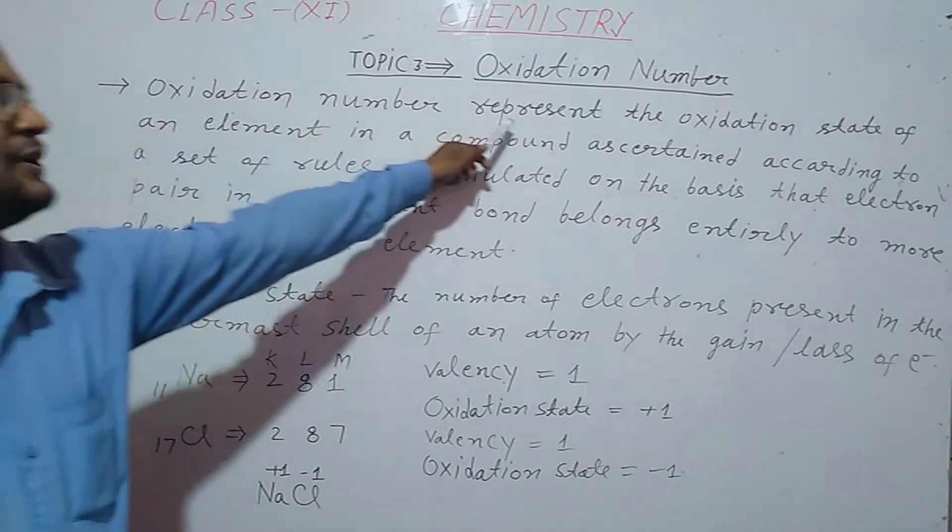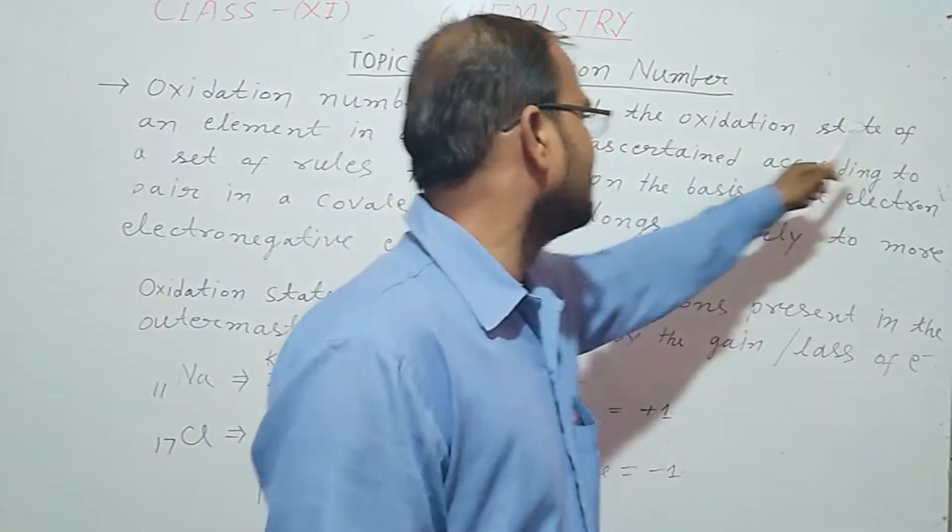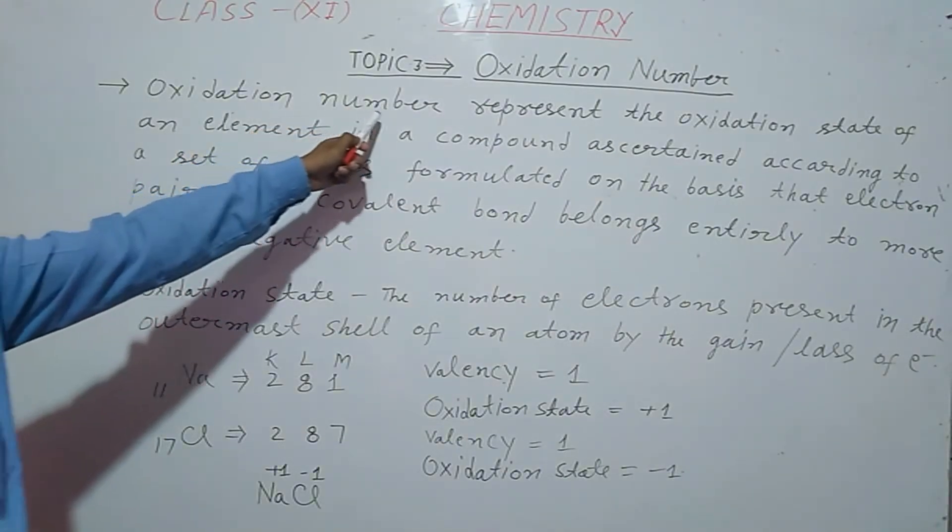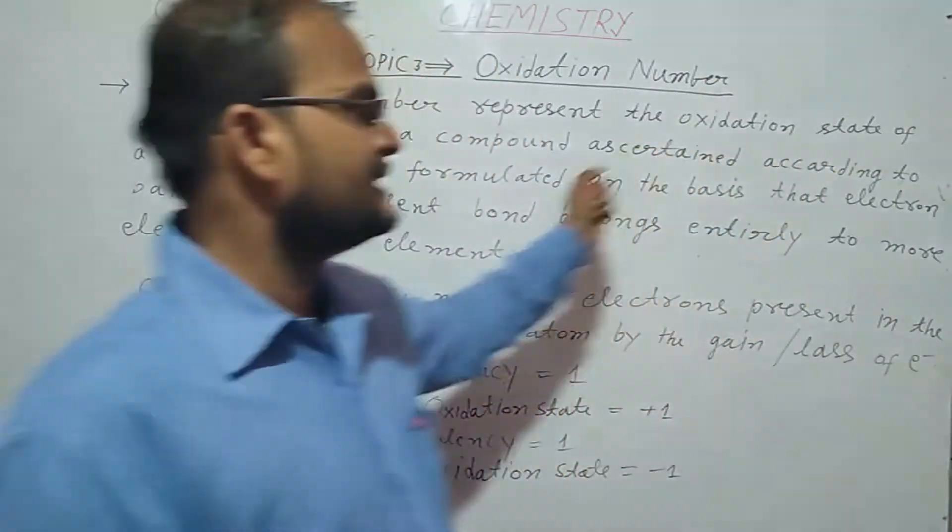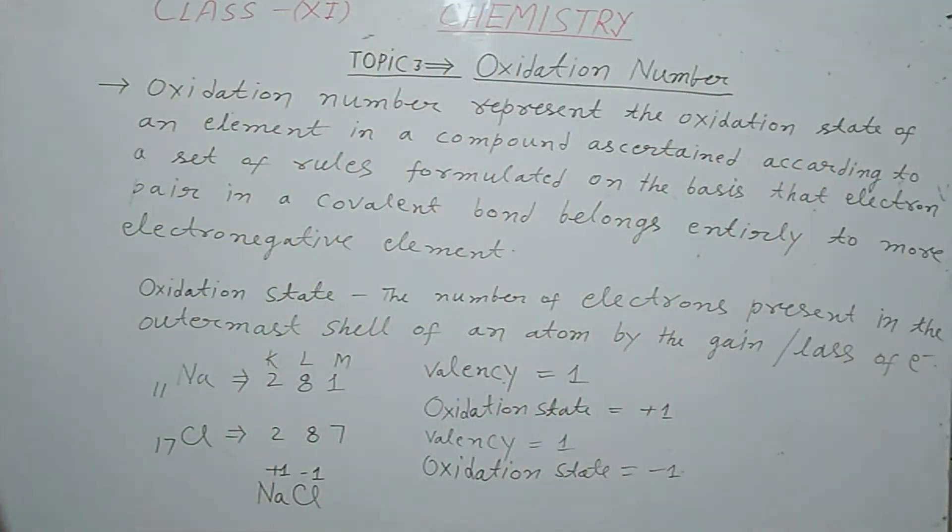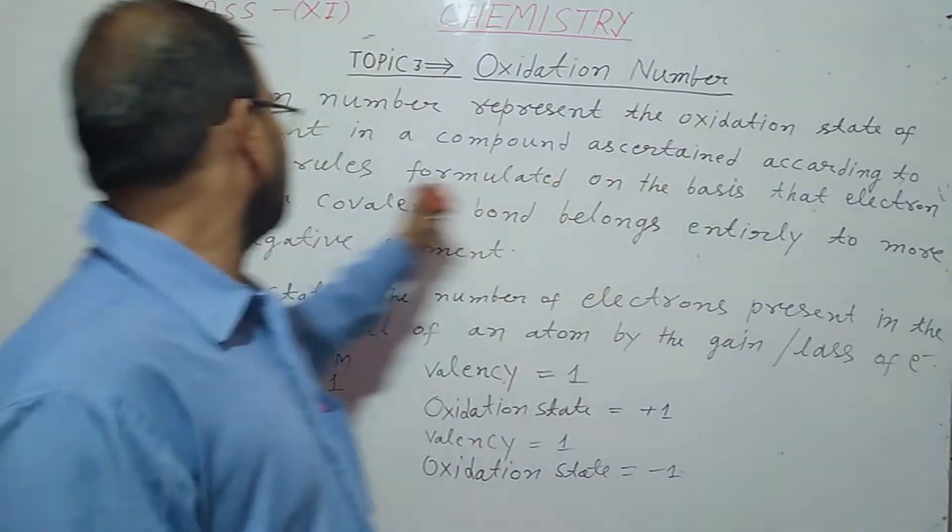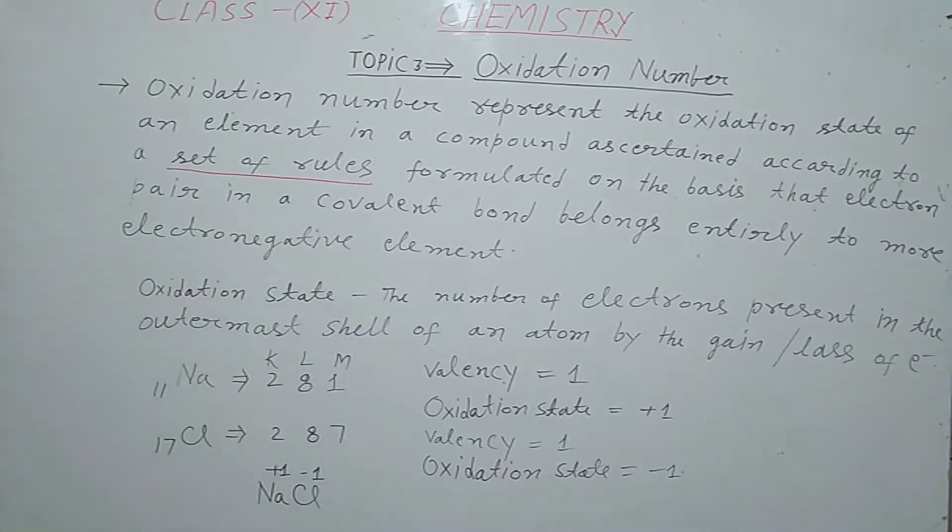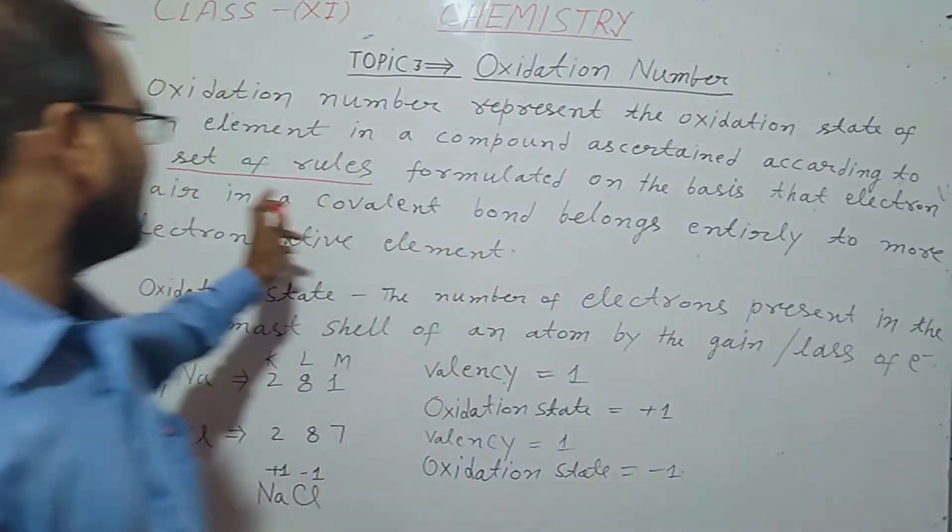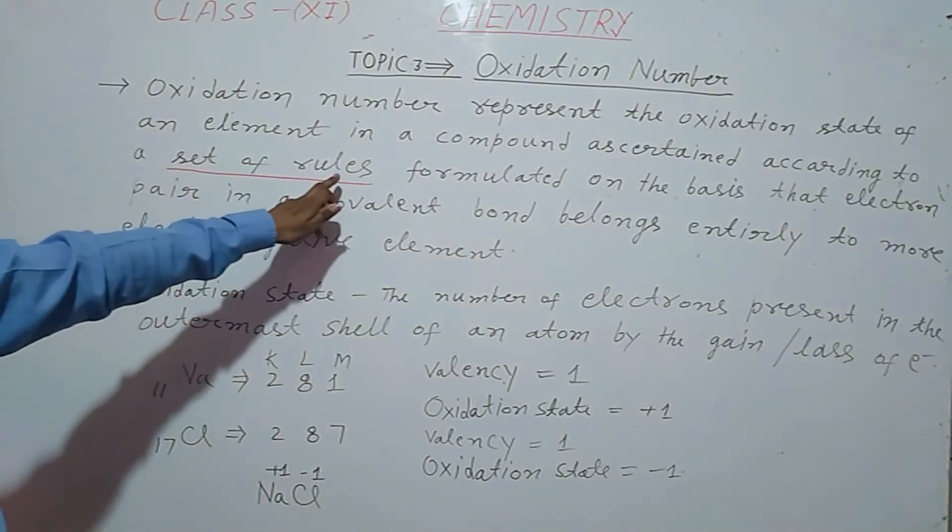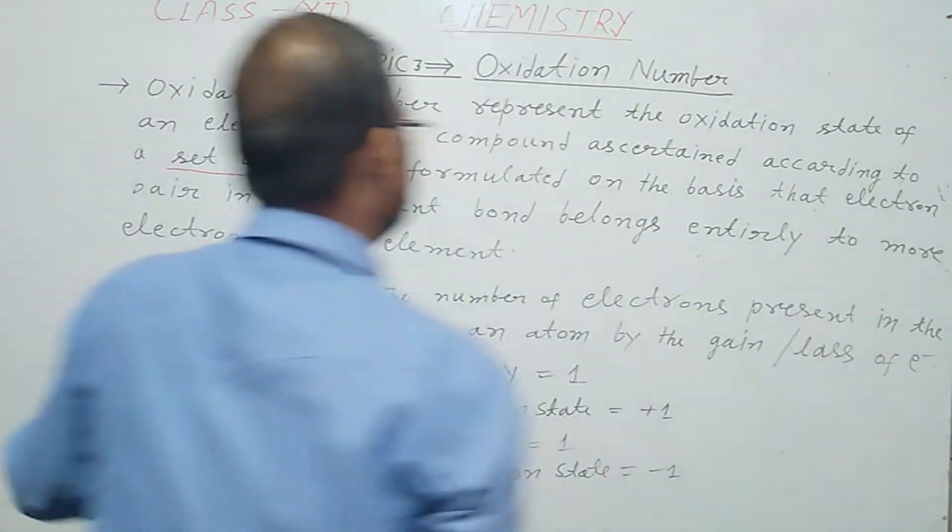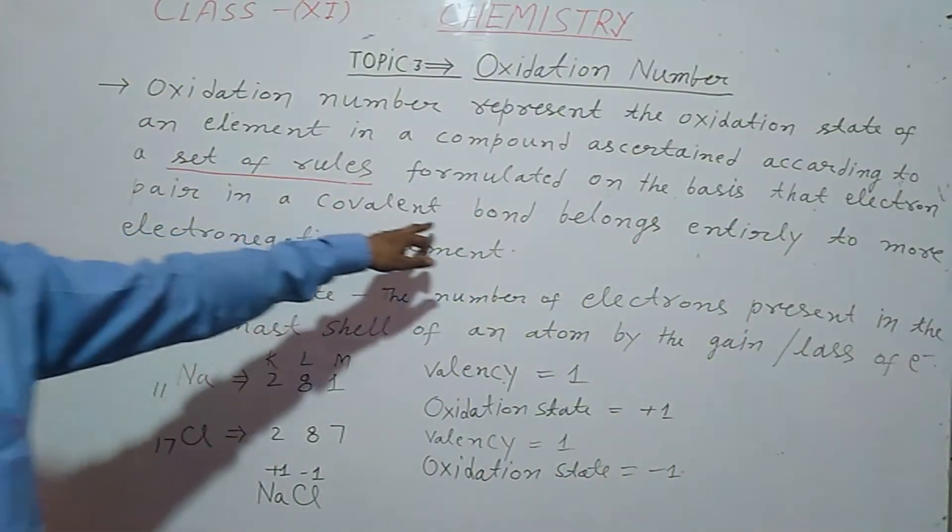Oxidation number represents the oxidation state of an element. In a compound according to a set of rules, formulated on the basis of that electron pairs in a covalent bond.